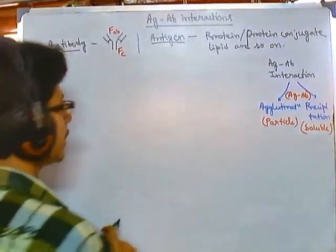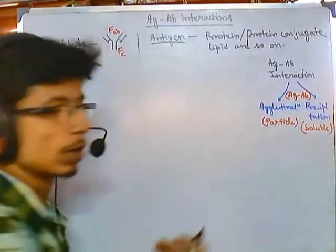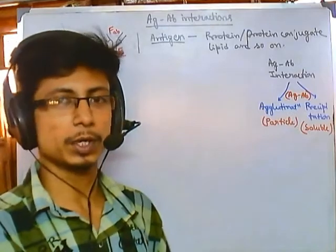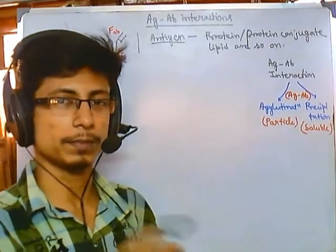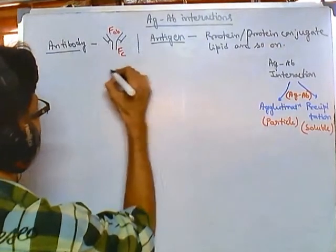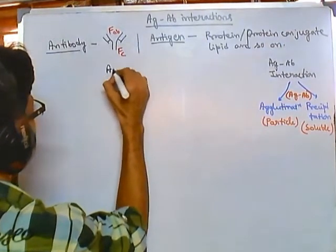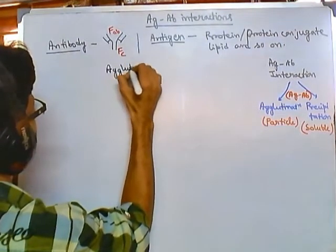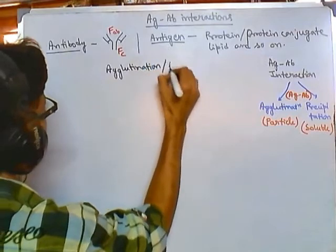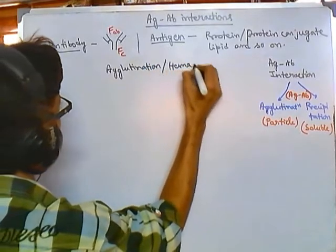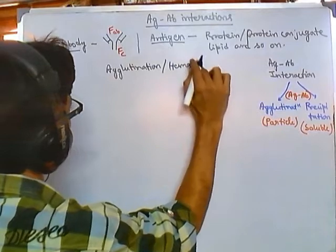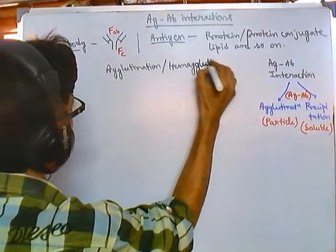The type of agglutination studies is also called hemagglutination because we are talking about agglutination in blood. Blood is called 'heme', so it is called hemagglutination.